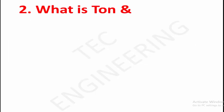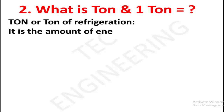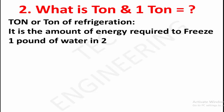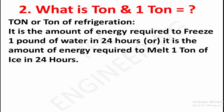What is a ton of refrigeration? A ton, or ton of refrigeration, is the amount of energy required to freeze 1 pound of water in 24 hours, or it is the amount of energy required to melt 1 ton of ice in 24 hours.